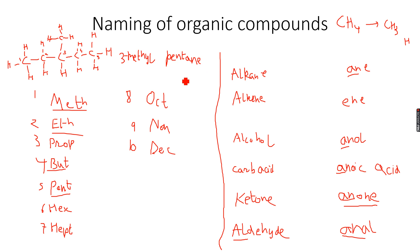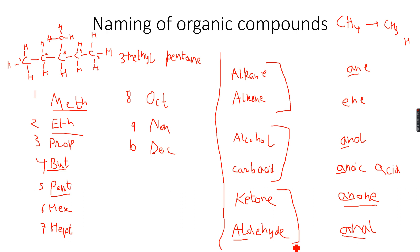We will be doing more about naming of alkanes and alkenes and all of these organic compounds in their respective playlists. Alkanes and alkenes will come under the hydrocarbons playlist. Alcohols, carboxylic acids, and esters will come under the alcohols, carboxylic acids, and esters playlist. Ketones and aldehydes will come under the carbonyl compounds playlist, and we'll also do haloalkanes in their respective playlists. So you don't really need to worry about the naming of organic compounds.